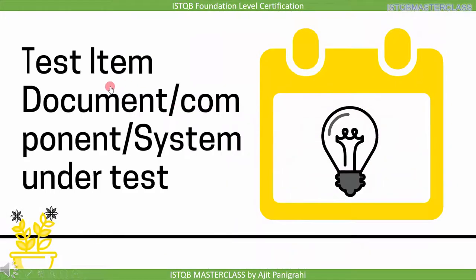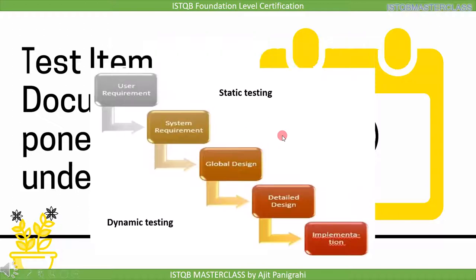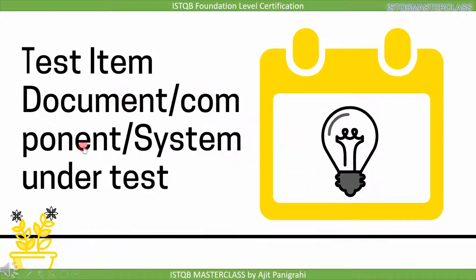The next term is test item, which is also known as test object. It is any document, component, or system which is under test. In the requirement stage, requirement is our work product, and if this has to be reviewed, then requirement is referred to as test item. Similarly, if we are in the implementation stage, the output is code, and if we want to perform testing on it, then code is our test item. So any document, component, or system which is under test is referred to as test item.